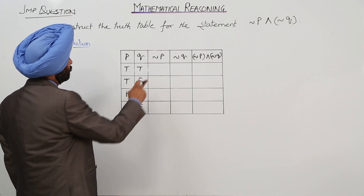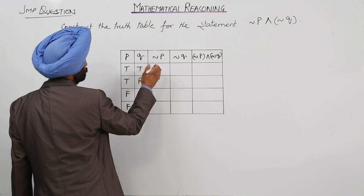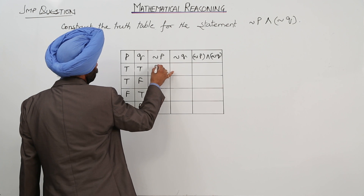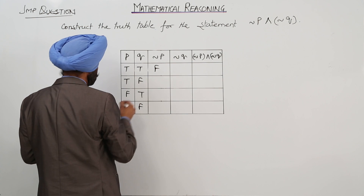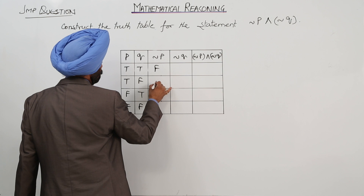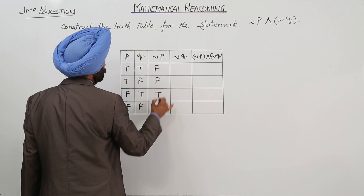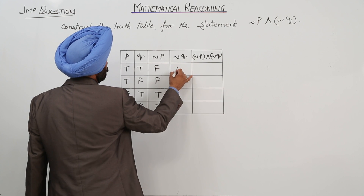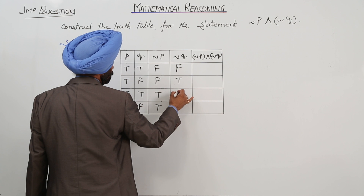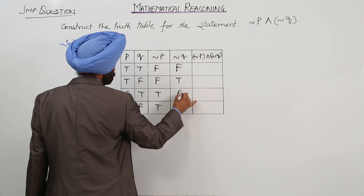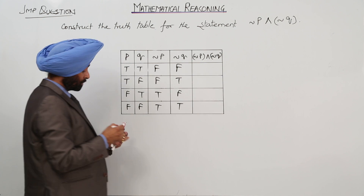What will be negation of P? It means opposite of P. So negation of P is: false, false, true, true. And negation of Q is: false, true, false, true.